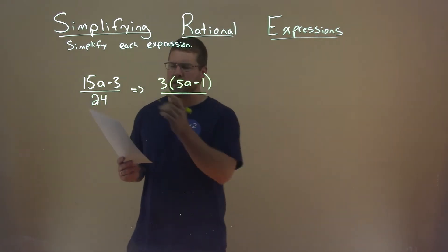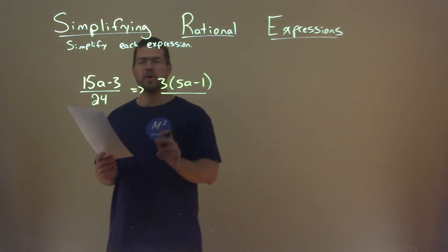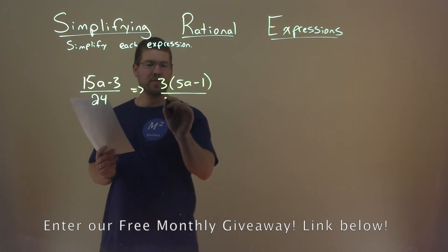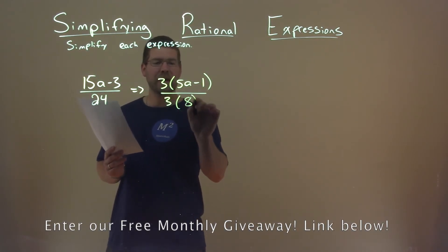The denominator, well, 24. Since I already pulled out a 3, is there a way I can pull out a 3 from 24? And well, 24 is 3 times 8, right?